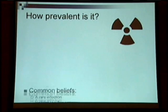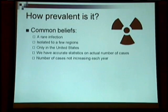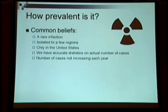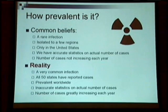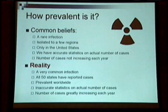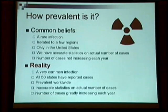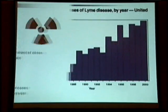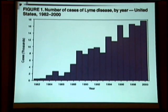Common beliefs about how prevalent Lyme disease is: it's believed to be a rare infection, isolated to only a few regions, only in the United States, and that we have accurate statistics on the actual number of cases — and that Lyme disease isn't really increasing each year. Reality is that it's a very common infection. All 50 states have reported cases, it is prevalent worldwide, and we do not have accurate statistics. This CDC chart shows the number of cases greatly increasing each year, but keep in mind that the CDC under-reports and is very conservative.